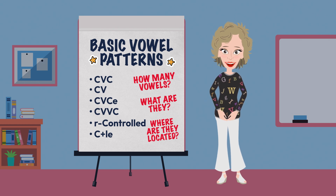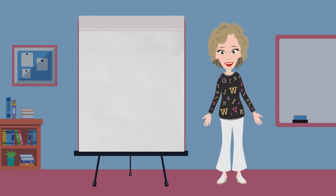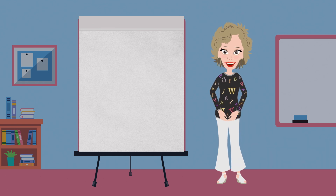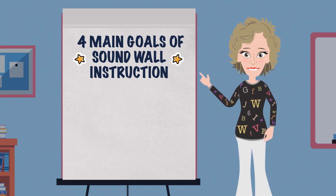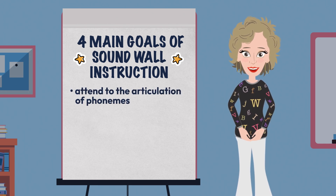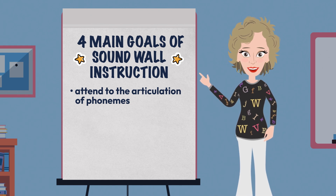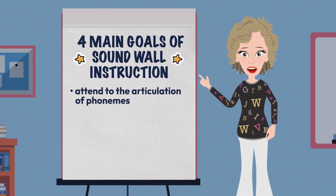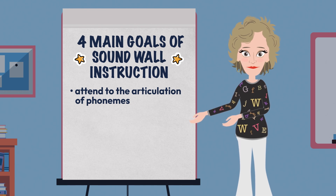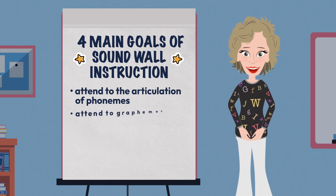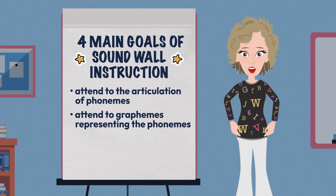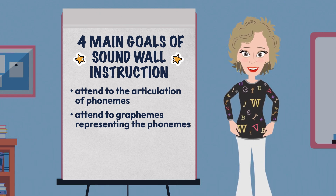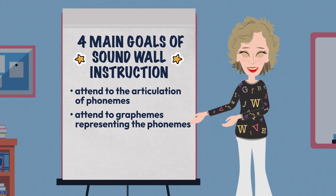Sound walls help make phonemes concrete for students. They are a visual reminder of what has been learned as well as what will be learned. There are four main goals of sound wall instruction. The first goal is that it allows students to attend to the articulation of phonemes — articulatory gestures for each phoneme are placed on the sound wall and taught in the classroom. The second goal is that students are afforded the opportunity to attend to graphemes representing the phonemes; the graphemes are not revealed all at once but are disclosed over time as they are explicitly taught.